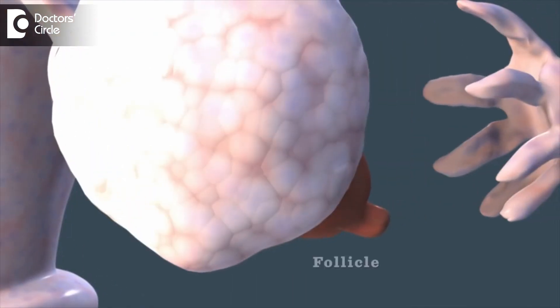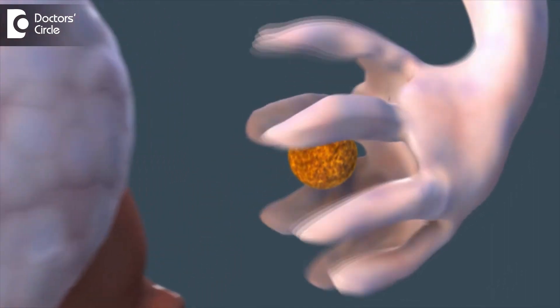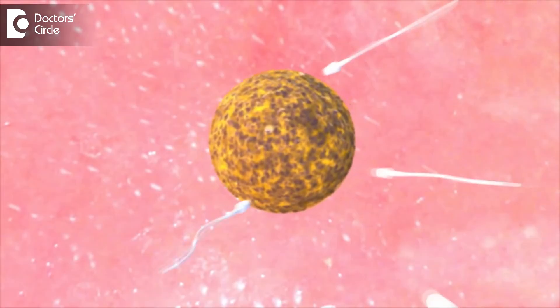For pregnancy to happen, during the time of ovulation the ovary releases a mature egg which is picked up by the fallopian tube. The sperms from the vagina migrate up, travel through the uterine cavity, and reach the fallopian tube where they meet the mature ovum. Once the mature ovum and the sperm meet each other, fertilization happens, which normally occurs in the outer one-third of the fallopian tube. After fertilization, a zygote is formed, and this zygote remains in the fallopian tube for 3-4 days before it heads towards the uterine cavity.